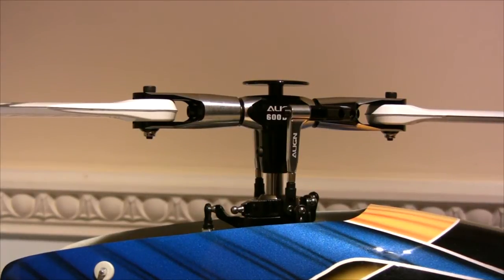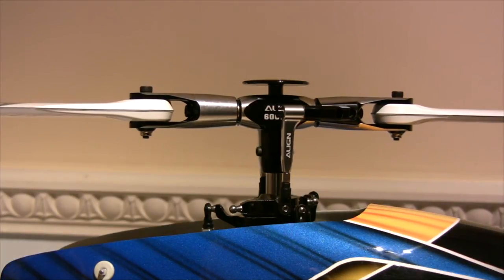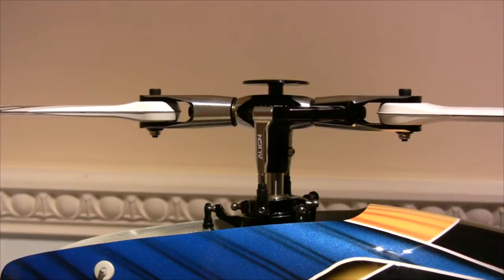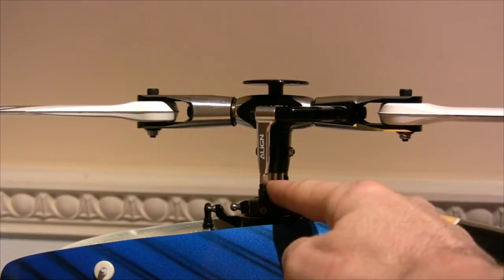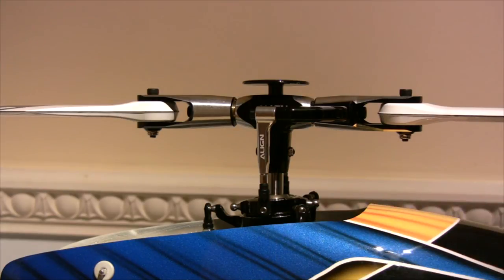Just to finish off this section, this is the head now installed onto the 600 EFL Pro. As you can see, it sits extremely low over the body of the model and it's all connected up. I haven't done the work to get zero degrees pitch yet on this link when the swash plate is at mid stick.